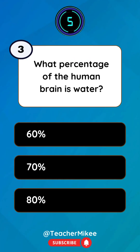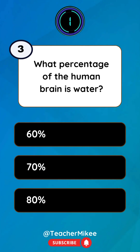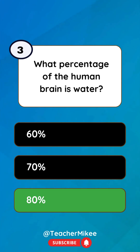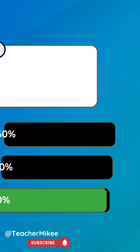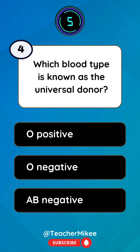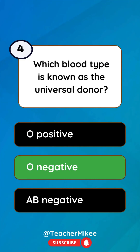What percentage of the human brain is water? 80%. Which blood type is known as the universal donor? O-.